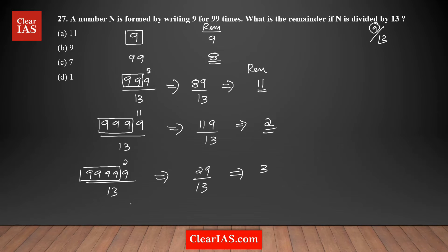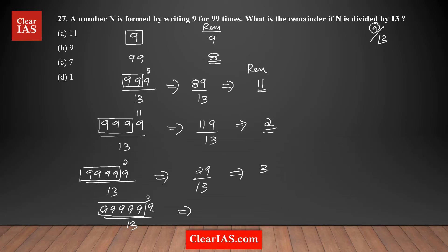For six 9s, I know five 9s gives remainder 3, so I check 39 divided by 13 — and 39 is exactly divisible by 13. So if there are six 9s, the remainder when divided by 13 is 0.